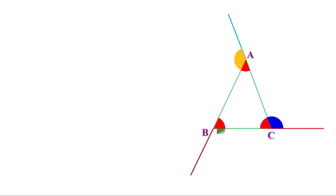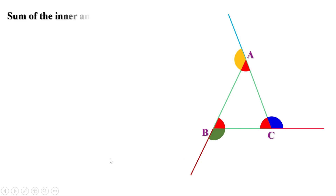For a triangle there are three outer angles. The sum of each inner and outer angle pair is 180 degrees — this applies at each of the three vertices. So the sum of all inner and outer angles of this triangle is 180 + 180 + 180, or 3 × 180. The sum of inner angles of a triangle is 180 degrees.